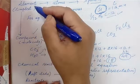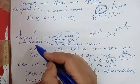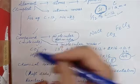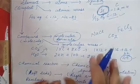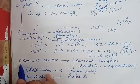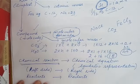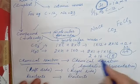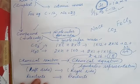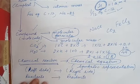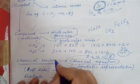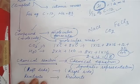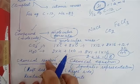Now when one element or one compound combines with another, or when two compounds combine, the process is known as a chemical reaction. This chemical reaction is represented symbolically as a chemical equation. So a chemical equation is the symbolic representation of a chemical reaction.